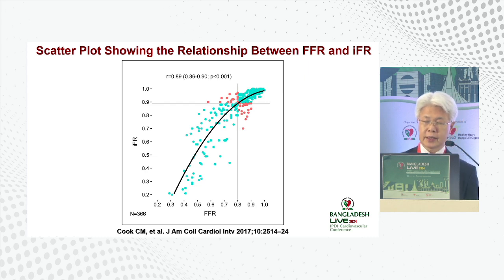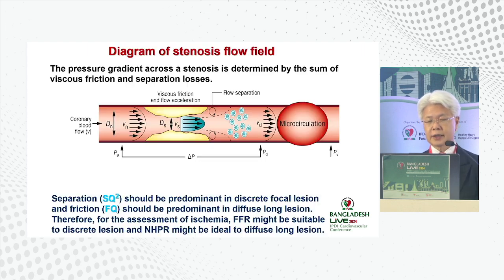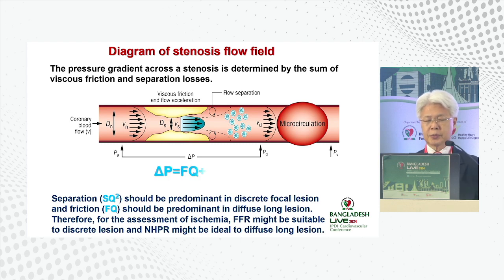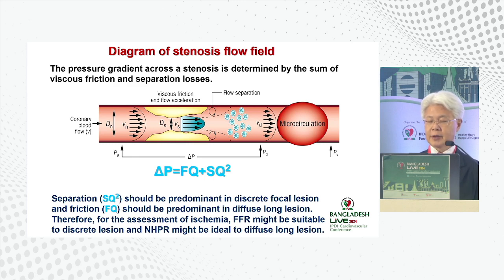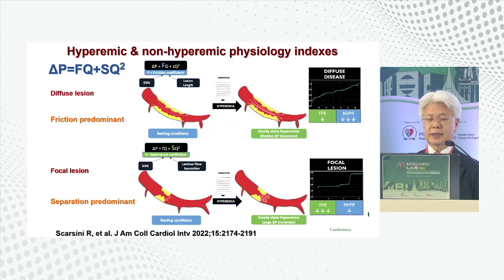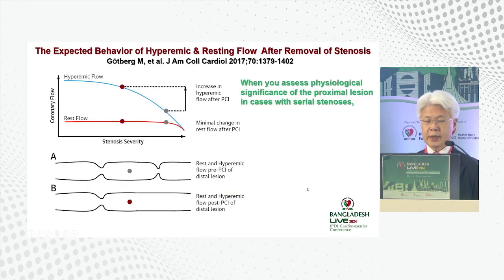If the resting index value is less than 0.89, it indicates ischemia. From the stenosis-flow relationship, pressure gradient is composed of friction and separation. Separation predominates in discrete focal regions, while friction predominates in diffuse long lesions. Therefore, for assessing ischemia, FFR with hyperemia is more suitable for discrete focal regions, and non-hyperemic resting indices are more ideal for diffuse long lesions.